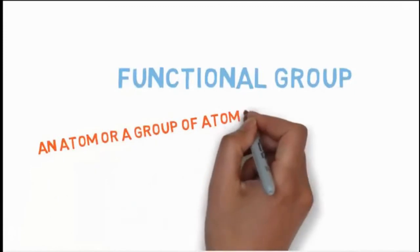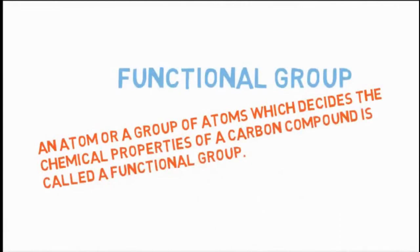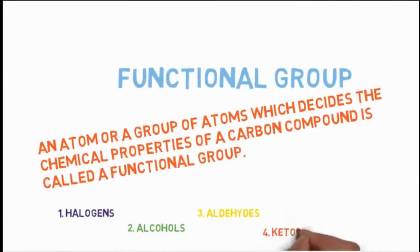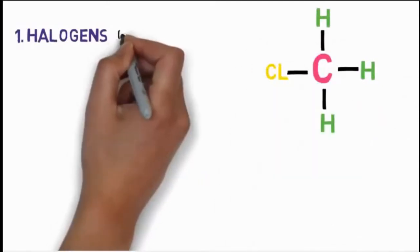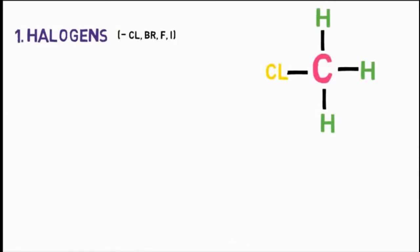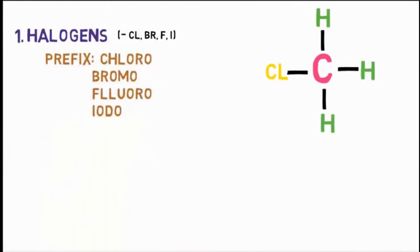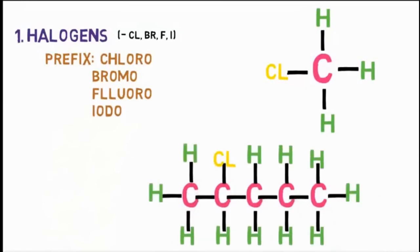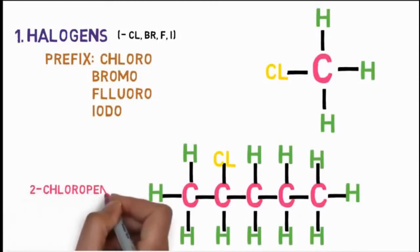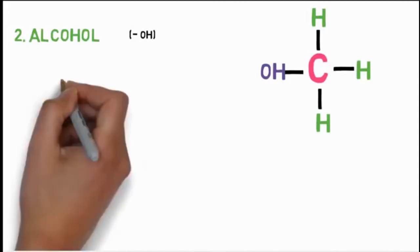Functional groups: an atom or a group of atoms which decides the chemical properties of a carbon compound is called a functional group. There are many, but here we need to learn five: halogens, alcohols, aldehydes, ketones, and carboxylic acids. If a hydrogen of a carbon compound is replaced with chlorine, bromine, fluorine or iodine, those are called halogen functional groups.